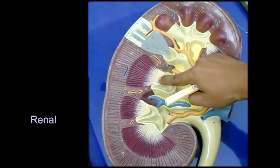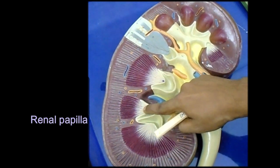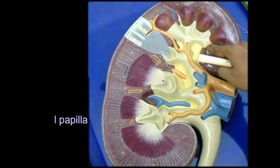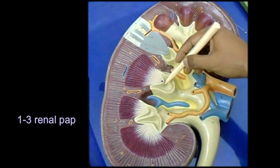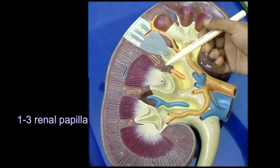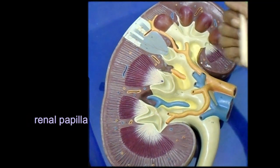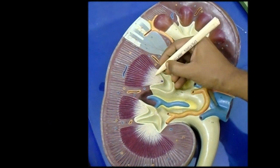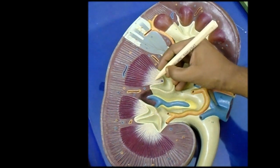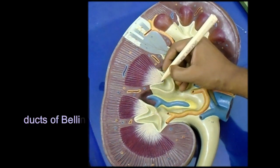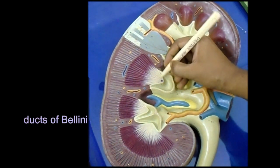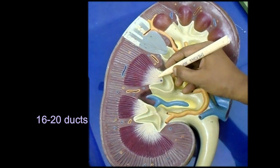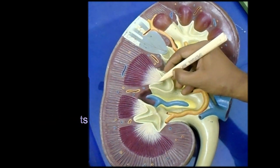The projected portion is known as the renal papilla. Each minor calyx can receive 1 to 3 renal papillae. The duct-like structures visible are the ducts of Bellini. Each papilla is perforated by 16 to 20 such ducts.